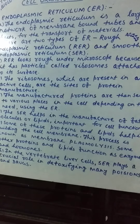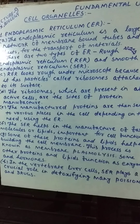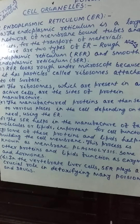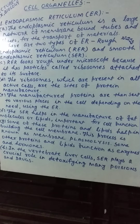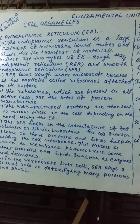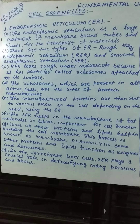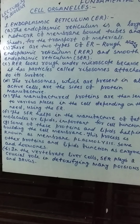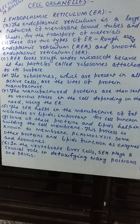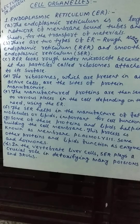Some questions may be asked. Which cell organelle is actively involved in membrane biogenesis? The answer will be endoplasmic reticulum. Next question: which cell organelle plays a crucial role in detoxifying many poisons and drugs in a cell? Again, it is the smooth endoplasmic reticulum in the vertebrate liver cells.